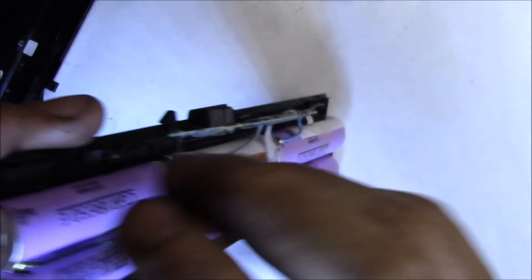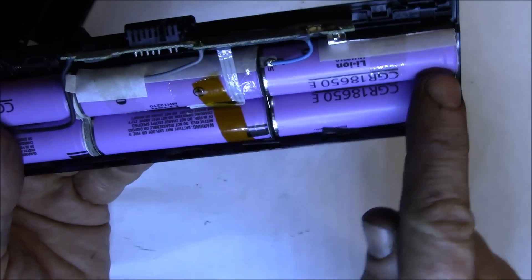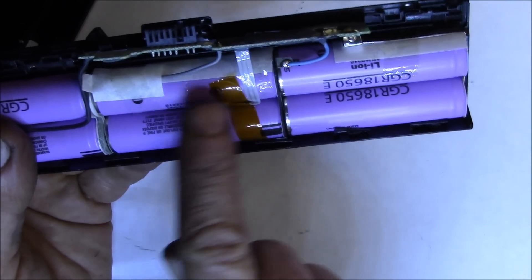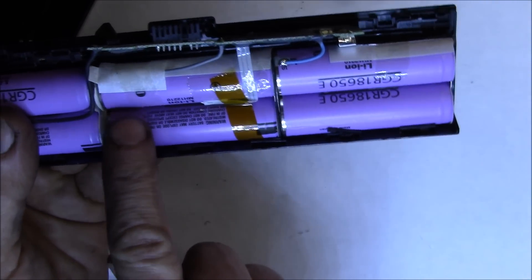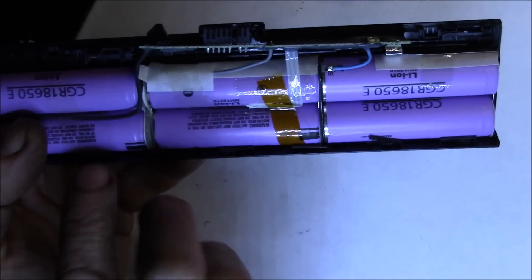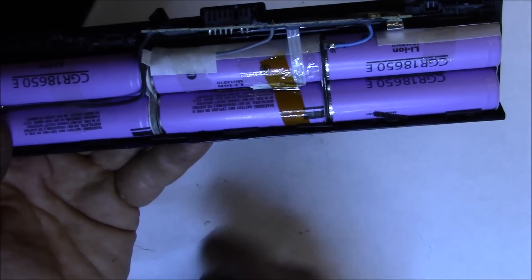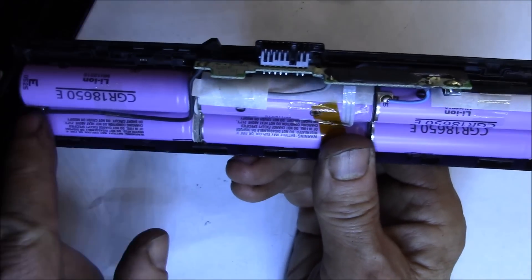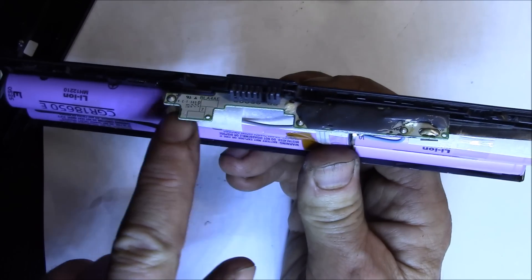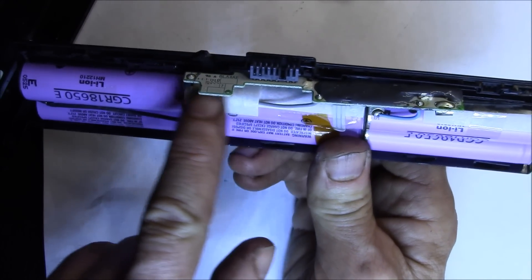These are all wired in series here. The later cells, like the 2012 cells, have this bottom cell reversed. That one you have to be careful of because there are actually two connections right here that are right next to each other.